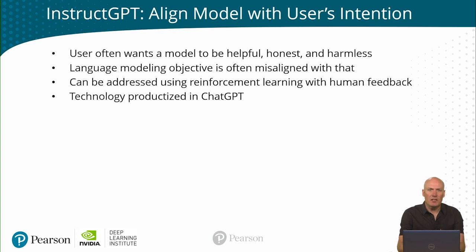We will now talk about InstructGPT. GPT-3 has been shown to generate very coherent text as its output. However, it's not necessarily the text that the user wants. If you ask it a question, it might provide you with a list of similar questions instead of the answer. So the focus of the InstructGPT study is to align the model with the user's intention. The goal is to arrive at a model that is helpful, honest, and harmless. When a model learns to predict the next word, it is not necessarily aligned with that objective — after all, it's trained on text from the internet, and not all text on the internet is helpful, honest, or harmless. In order to do this, they introduced reinforcement learning with human feedback, or RLHF. The InstructGPT technology was later used in the ChatGPT product.